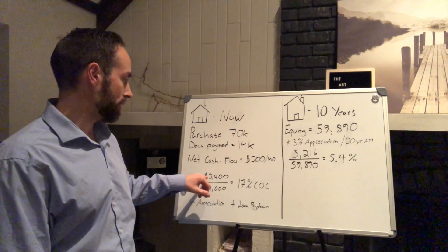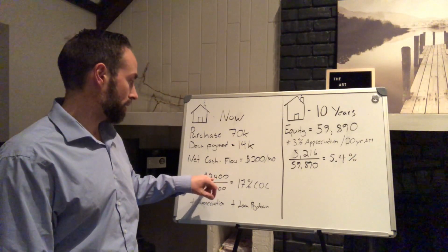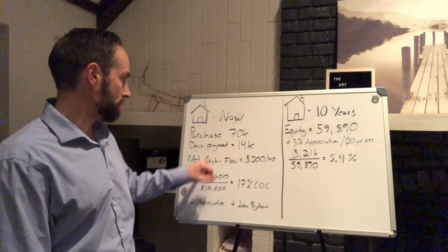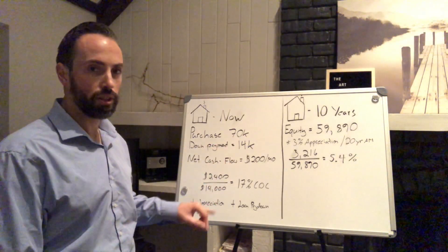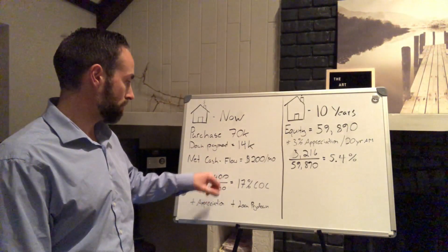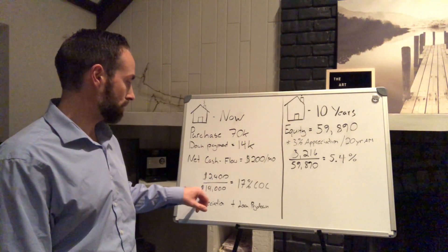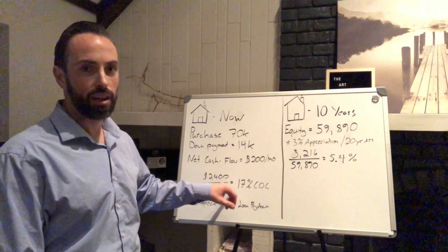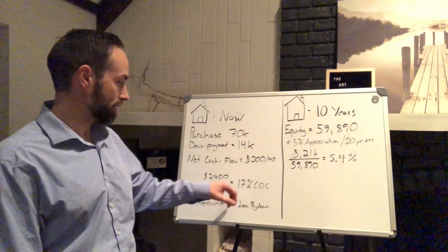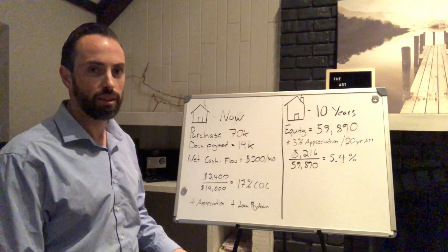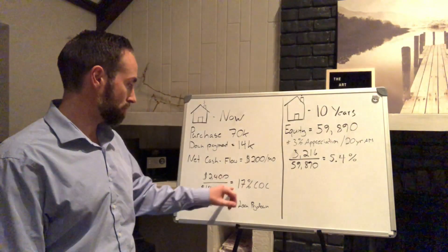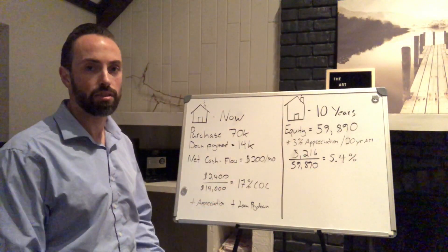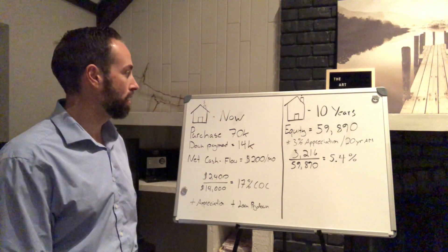So if you take that $200 a month and multiply it by 12, you get an annual cash flow of $2,400. Your actual money invested is $14,000, so $2,400 divided by $14,000 gives you a 17% cash-on-cash return — which is smoking any rate you're going to get in the stock market. That's really good, plus you're getting appreciation and loan pay-down on top of that.